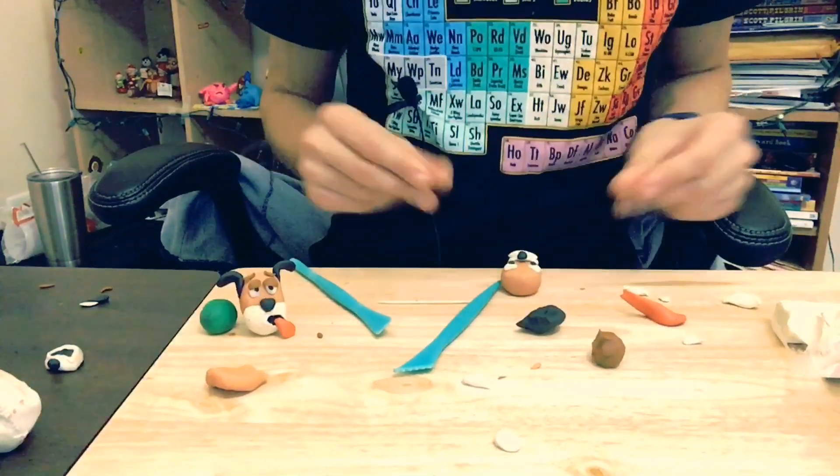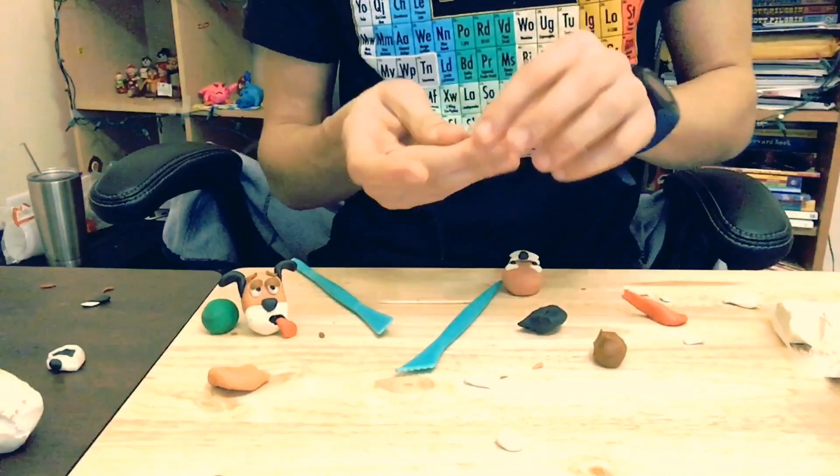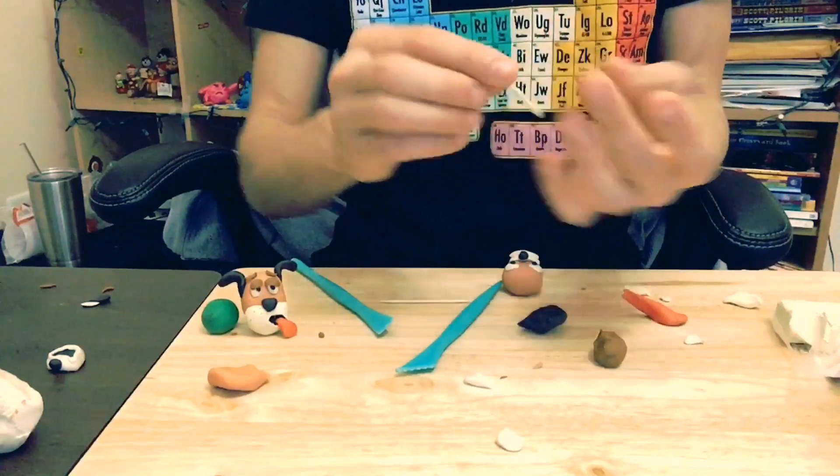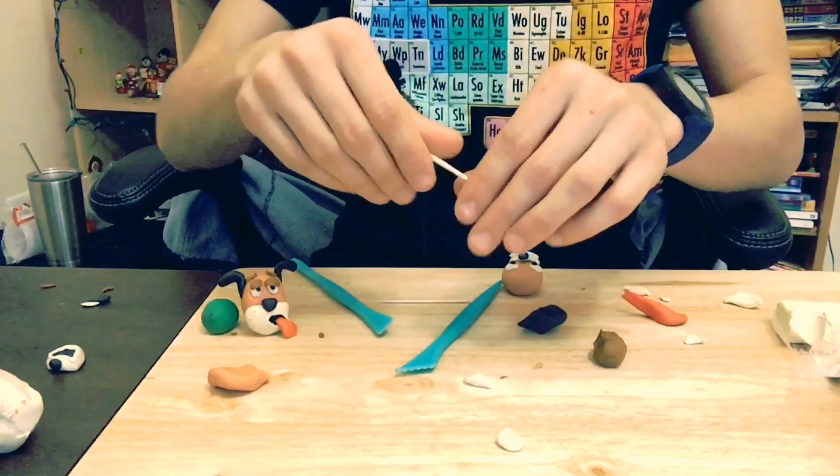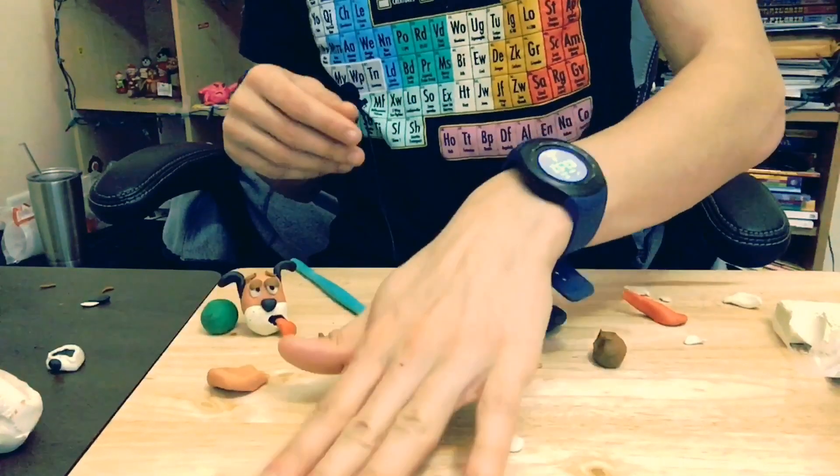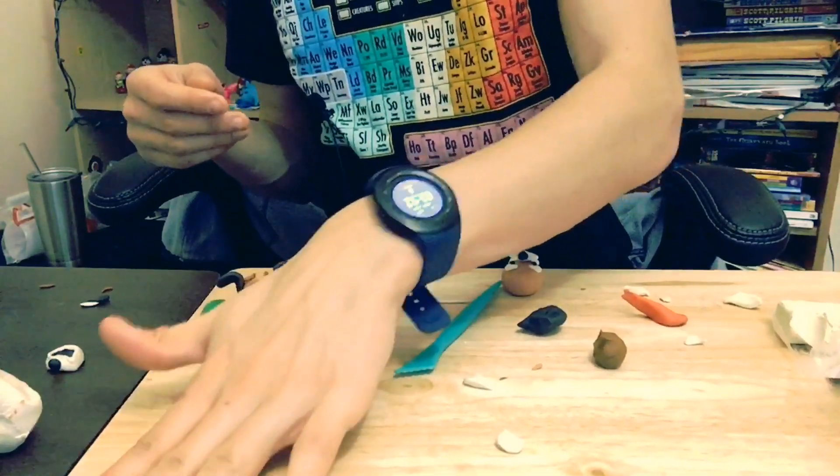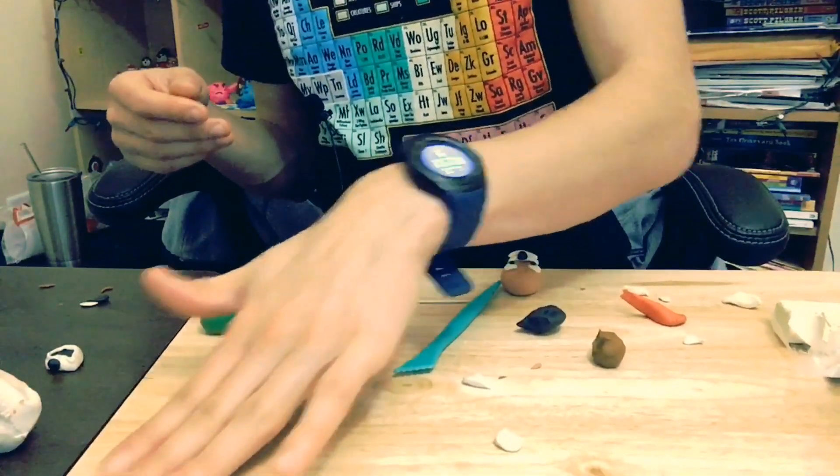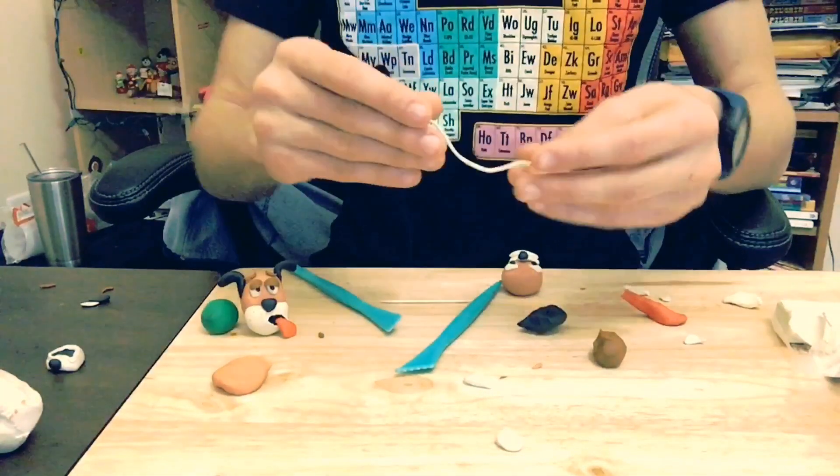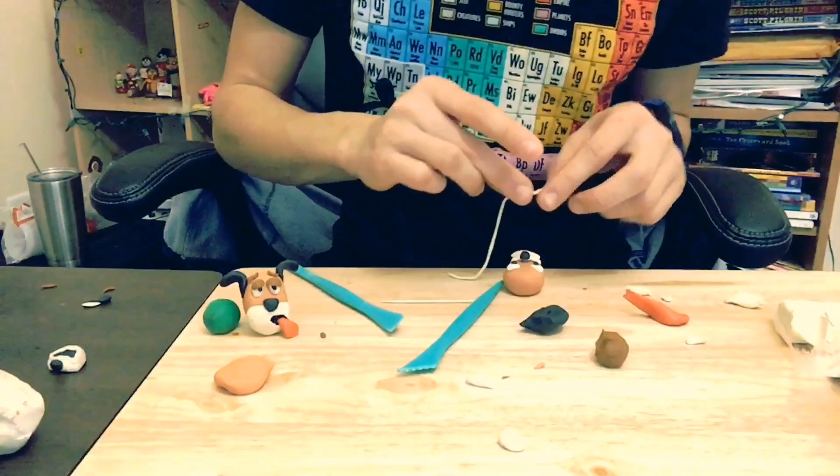Now here's the tricky part. You're going to take this cream color, roll it out, thin it out. Great. I don't like this little string.